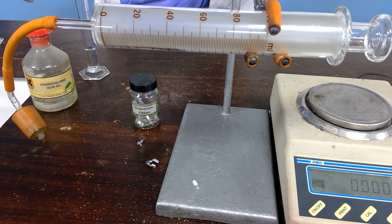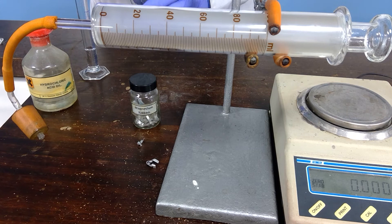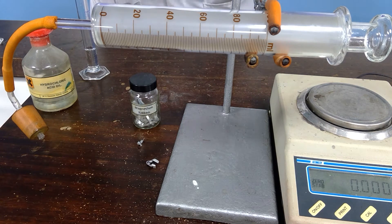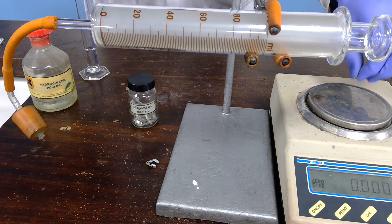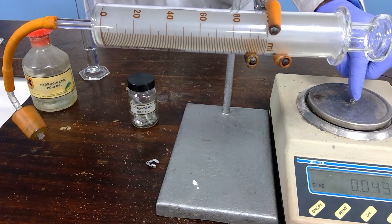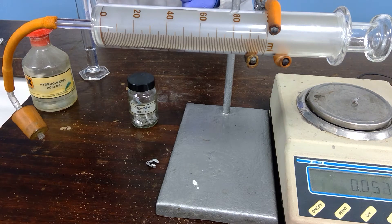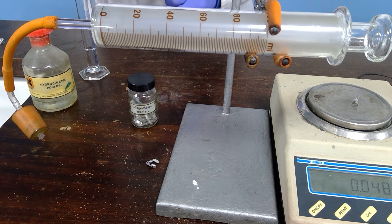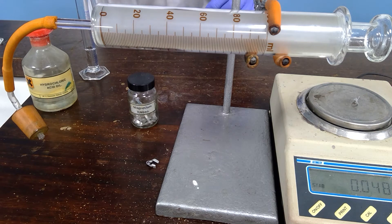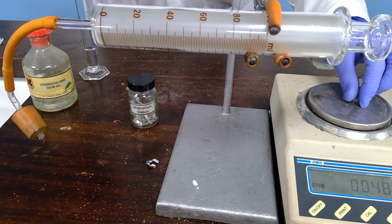For this second experiment, let's use the second size of magnesium. Again making sure that's at zero, let's take the mass of the second piece of magnesium. Okay, we have that.